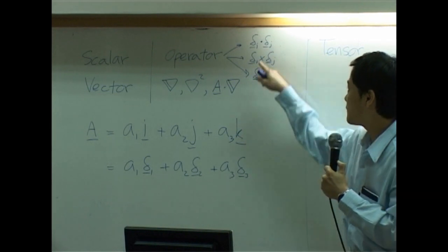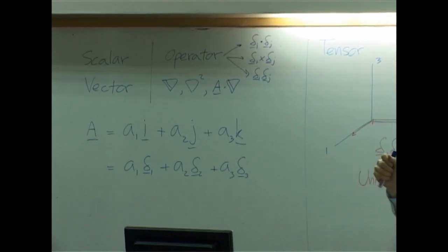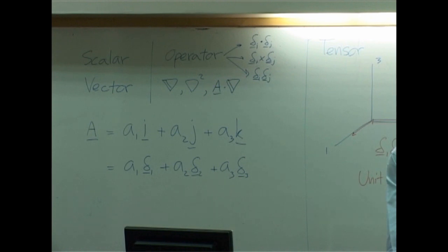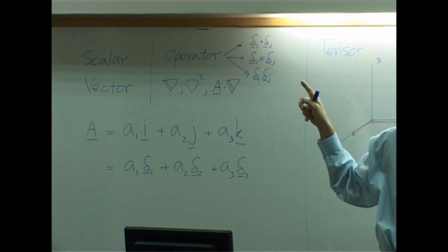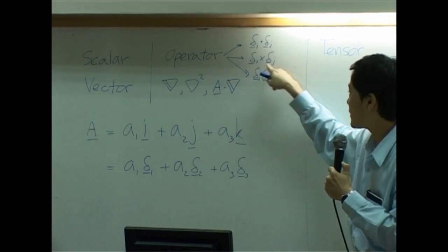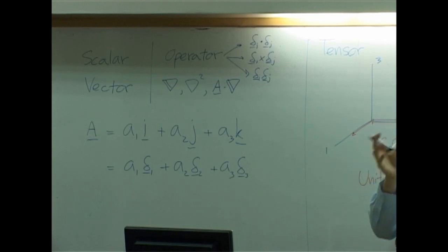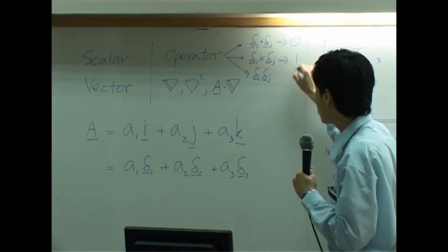If I have δ₁ and δ₂ dotted together, what do you get? Zero. What about δ₁ dotted with δ₁? One — the size is one. What about direction? There is no direction. The dot product gives you a scalar. How about cross product? If I have δ₁ crossed by δ₂, the result is a vector. That vector will be perpendicular to the plane formed by δ₁ and δ₂. So dot product gives you zero directions, and cross product gives you one direction.